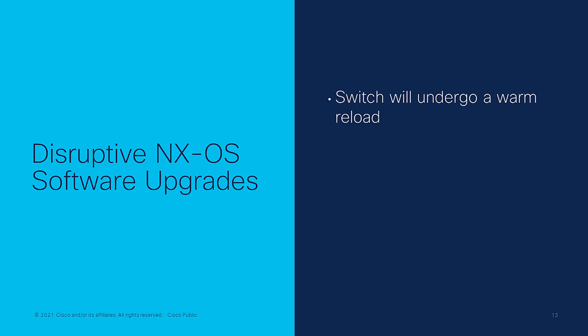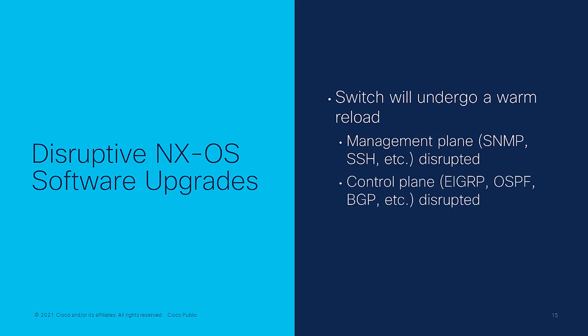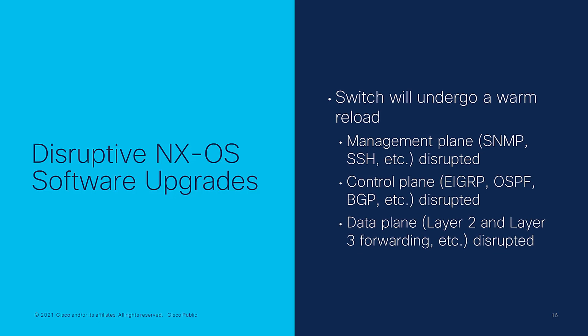As part of a disruptive NXOS software upgrade, the switch will perform a warm reload. As a result, the management plane will be disrupted, so any monitoring of the switch will stop and your SSH session to the switch will be interrupted. The control plane of the switch will be disrupted, so any control plane protocols such as OSPF, EIGRP, BGP, and so on, will stop functioning. Finally, the data plane of the switch, such as Layer 2 forwarding, Layer 3 forwarding, and so on, will be disrupted, and all interfaces will go down while the switch reloads.